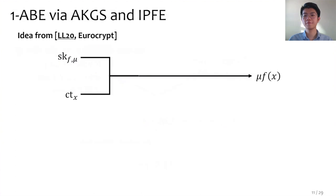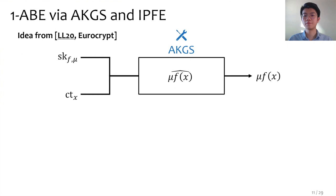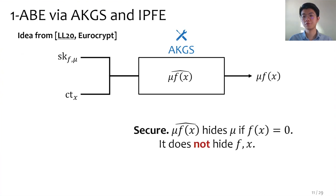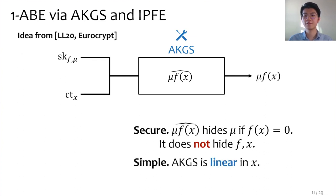To see this more clearly, let's first review the ideas from the previous work. In the 1ABE of the previous work, the message and the policy are associated with the key, and the attribute with the ciphertext. When they are put together, we obtain a randomized encoding of mu times f(x), which is our AKGS. The encoding can then be used to recover this value. It should hide mu if f(x) is zero. Since in ABE we do not protect f or x, the encoding does not need to hide them — this is known as a partially hiding randomized encoding. The encoding is linear in x, so that we can compute it using IPFE.